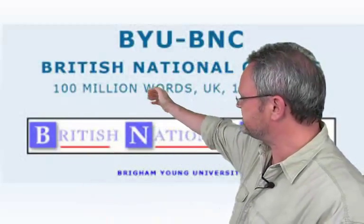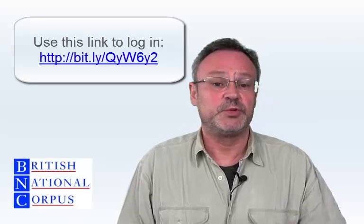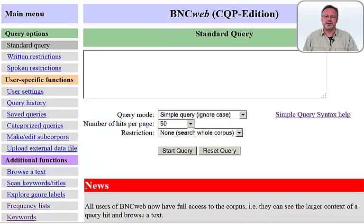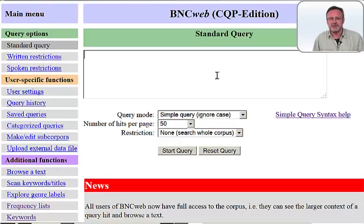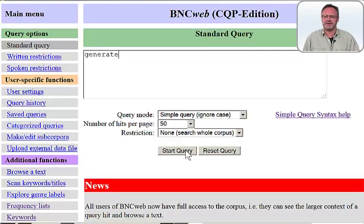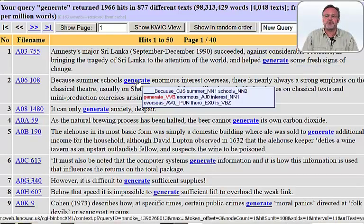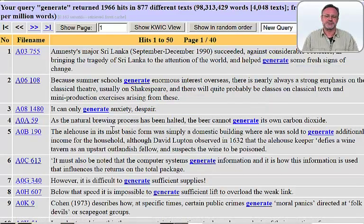The use of the British National Corpus is simple. Straight after login you will be sent to the standard query option. However, typing in the item generate would not be very helpful here because this would lead to string results containing this word without further options.